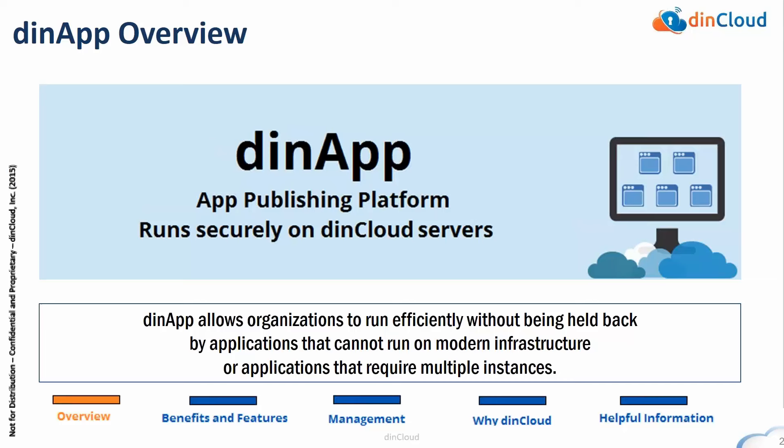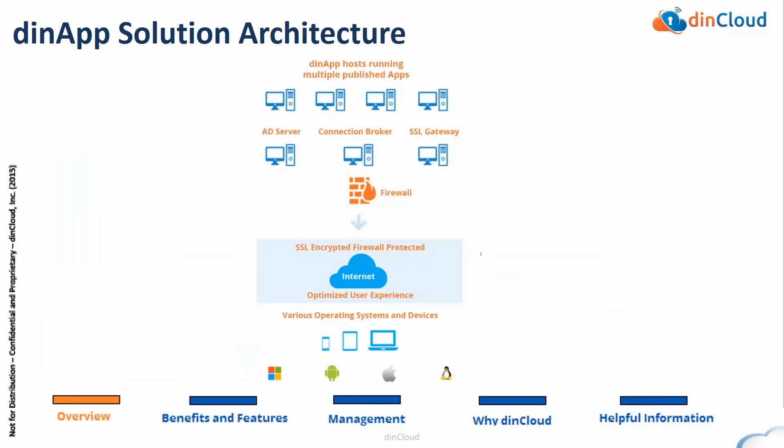The benefit to the organization is allowing us to manage the underlying infrastructure and the application publishing so you can focus on the business. As far as the architecture, starting from the top of the diagram, there are servers on our end that host the published applications, back-end infrastructure, an AD server for user authentication and authorization, a connection broker that manages user connections, allowing them to securely access the environment anywhere, anytime, from any device. The SSL gateway provides secure communications. Every customer gets their own dedicated virtual firewall appliance providing routing, networking, firewall rules, and VPN capabilities.